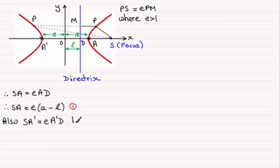And so we've got SA dash equals E times A dash D. And I also know that SA dash is going to be SA plus 2A. So I can substitute this in. I've therefore got SA plus 2A equals E times A dash D. But A dash D is going to be A plus L. So we've got E times all of A plus L. And I'll call this equation 2.